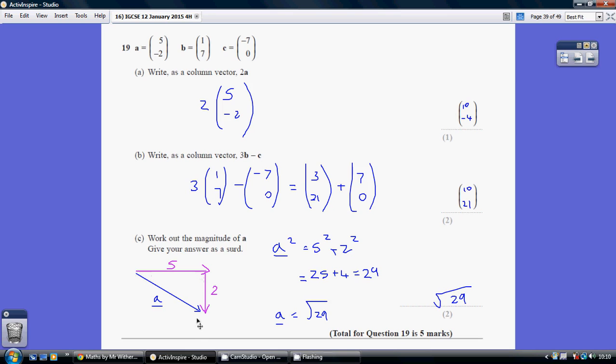Well, it's the diagonal, so we've actually just got a Pythagoras here. So the magnitude of A squared equals 5 squared plus 2 squared. 25 add 4 is 29, so the magnitude of A is the square root of 29. Give your answer as a surd, so we stop there.